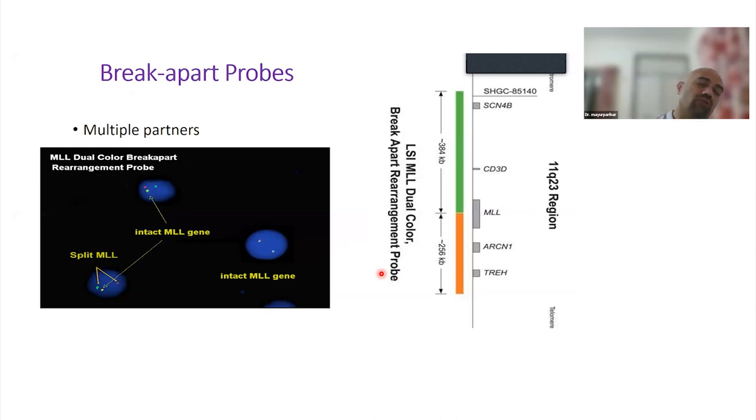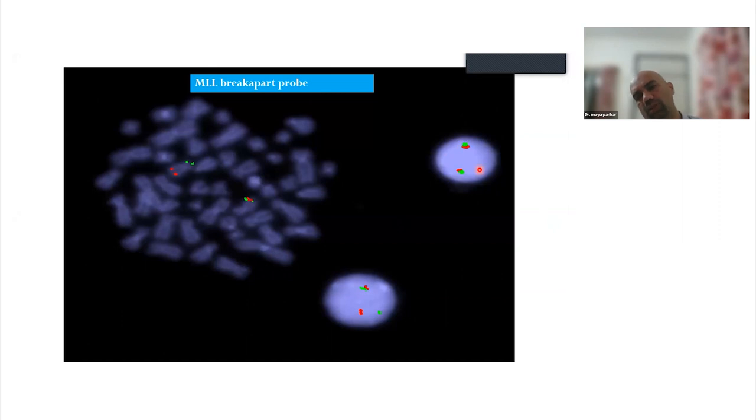There are different designs of probes. There are genes like MLL which are very promiscuous genes. They have at least 100 different partners in 110 different translocations. So how do you design probes for them? We use break-apart probes, wherein the green and red are together in a normal gene, and the moment there is a translocation they get separated. For example, this is a normal cell - you can see the red and green are together. Here you see the red and green have separated. These are called break-apart probes. This is for MLL or KMT2A gene. This is a metaphase showing a 10;11 translocation where the 5' and 3' are separated.